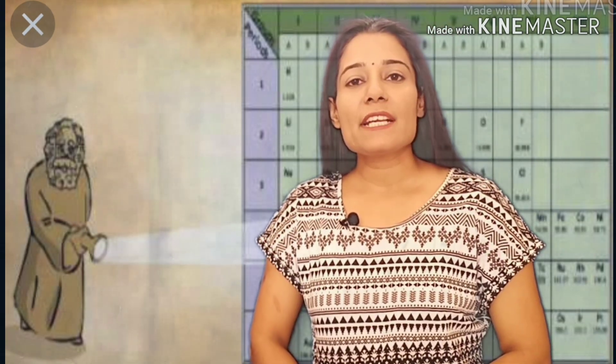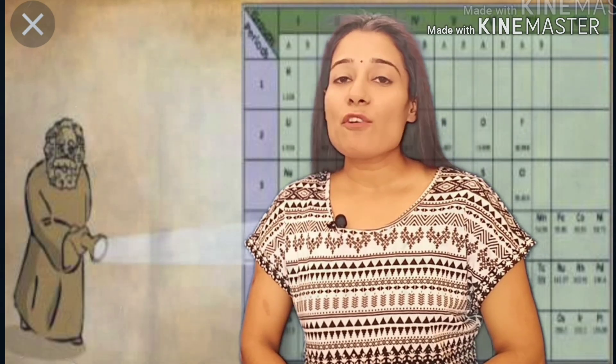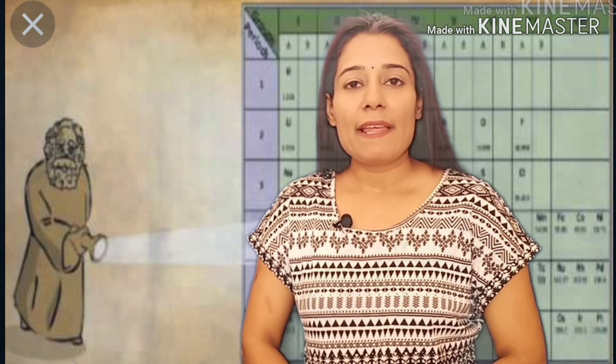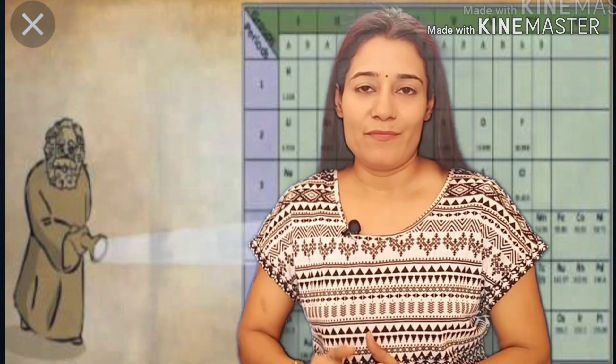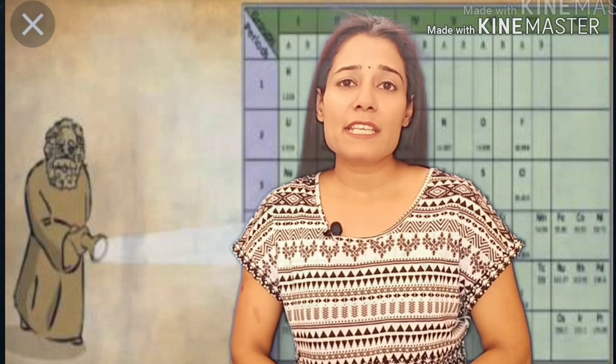Suppose we take sodium. Its oxide will be Na2O because valency of sodium is 1 while that of oxygen is 2. Similarly, its hydride will be NaH because the valencies of both these elements are 1. Likewise, he made compounds of each and every 63 elements known till that date.